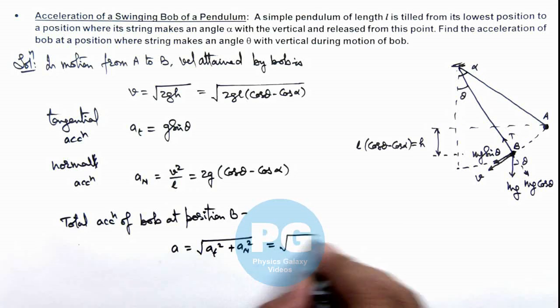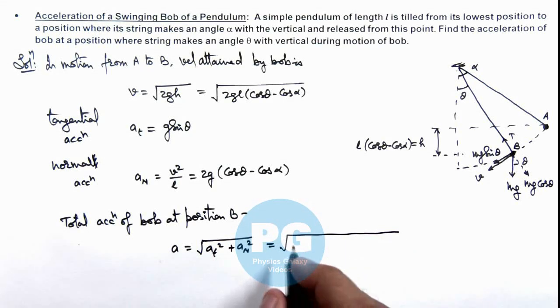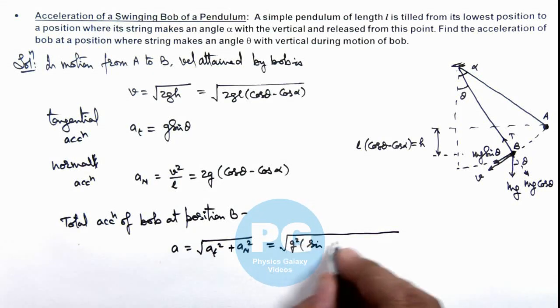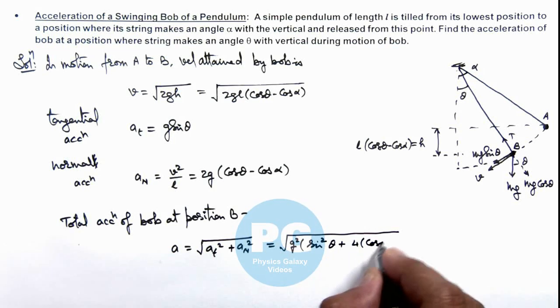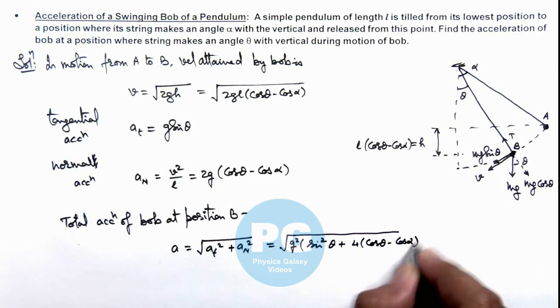This will give us the square root of - g² can be taken common, and this will be g² sin²theta plus 4 times (cos theta - cos alpha)².